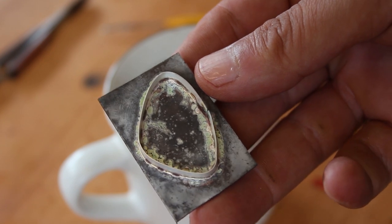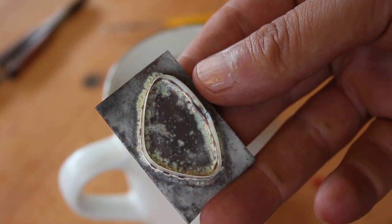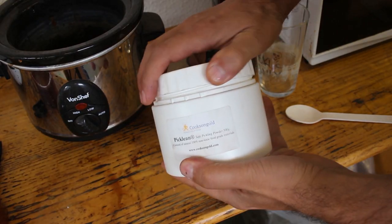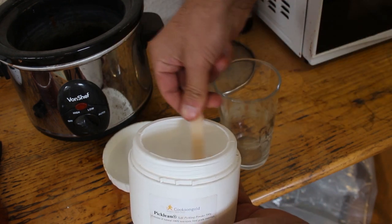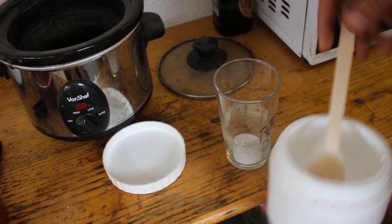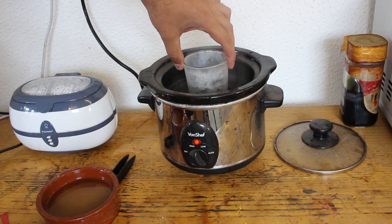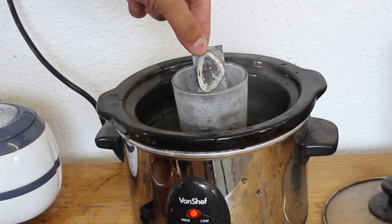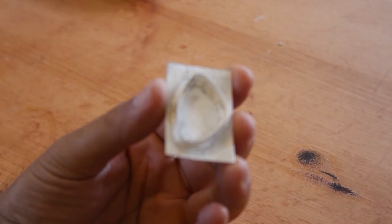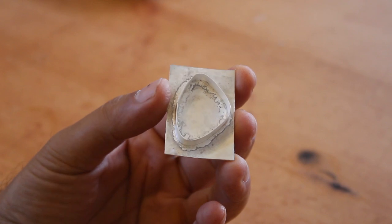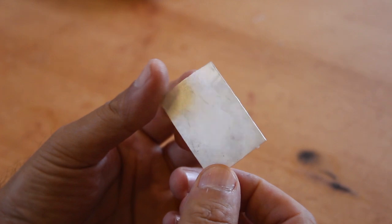So after soldering the bezel to the sheet, it was looking pretty rough. And so to clean off some of the oxidization and any remnants of the solder and flux, I used a pickling solution. This is just like a mild acid. And so I just used the directions on the tin to mix up some pickling mix. Put the piece in there for about half an hour and it came out nice and clean, ready for final shaping.